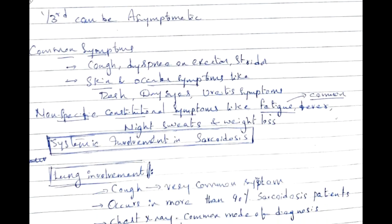Regarding clinical manifestations, one-third of patients can be asymptomatic. Common symptoms are cough, dyspnea on exertion, and stridor. Skin and ocular symptoms like rash, dry eyes, and uveitis can be present. Non-specific constitutional symptoms include fatigue — very common in sarcoidosis — fever, night sweats, and weight loss, resembling tuberculosis. If a patient doesn't respond to anti-tubercular therapy, sarcoidosis should be strongly suspected, as the treatment here is steroids.